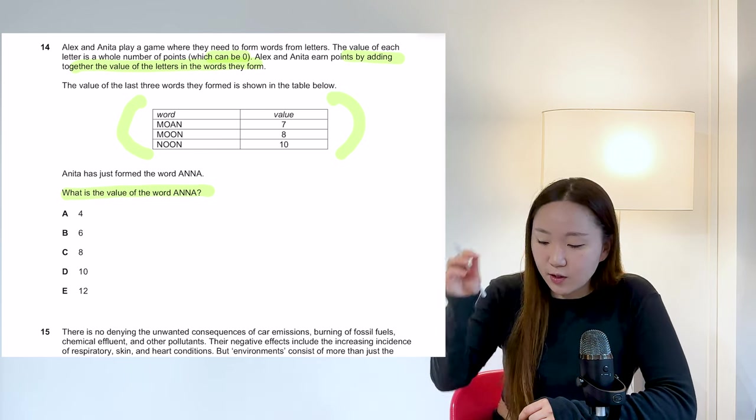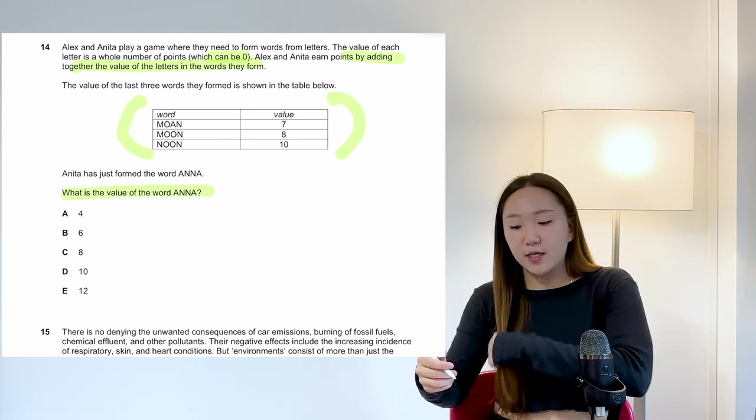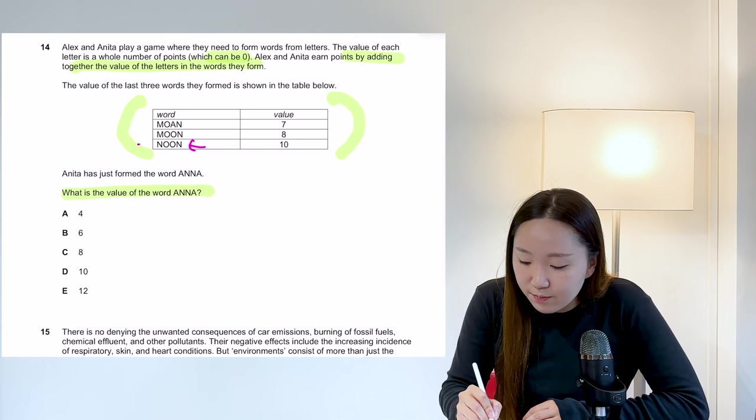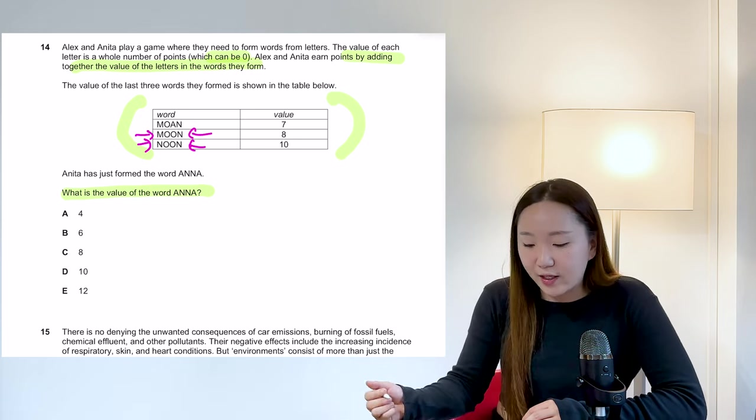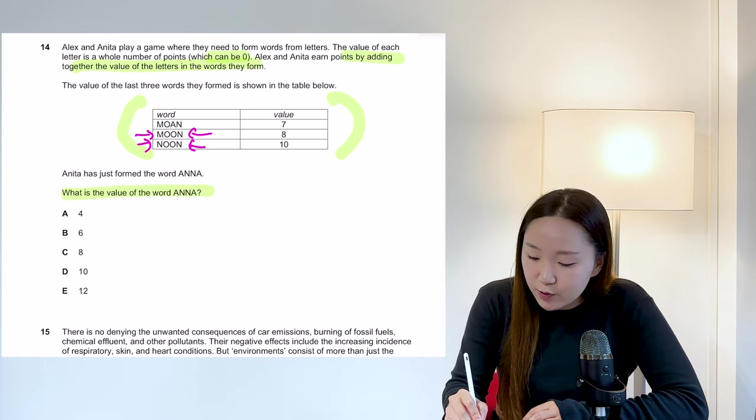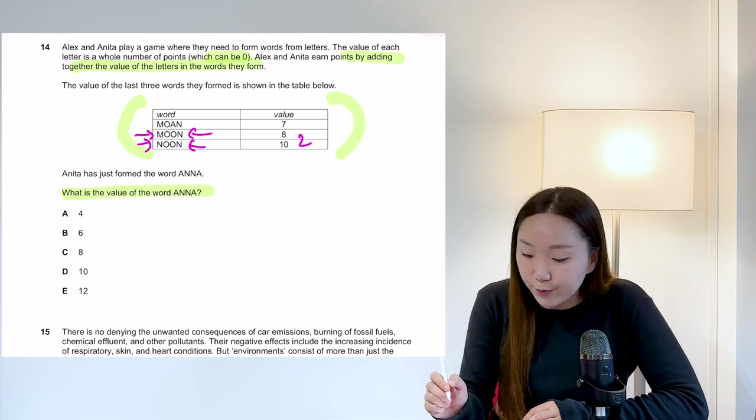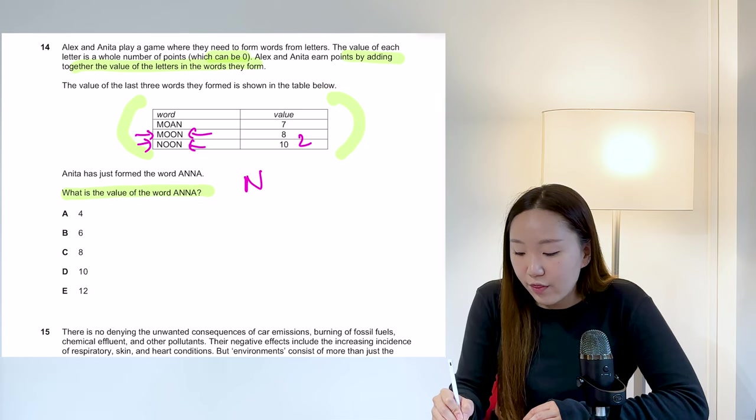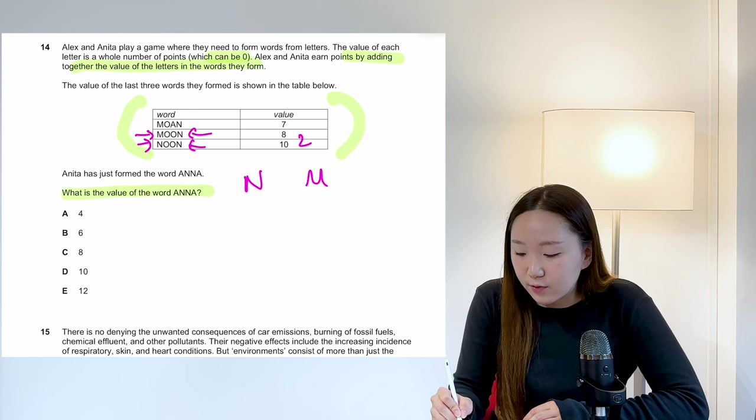So, I mean, the easiest ones to look at for this type of question is obviously where you've got noon and moon, because they are only one letter apart. So the only difference is M. So that difference there between these two totals is two, which means that N must be worth two more than M. So N equals M plus two.